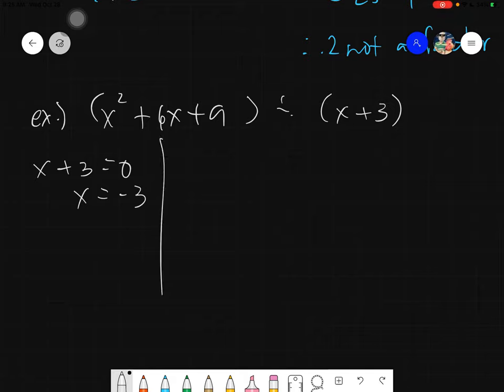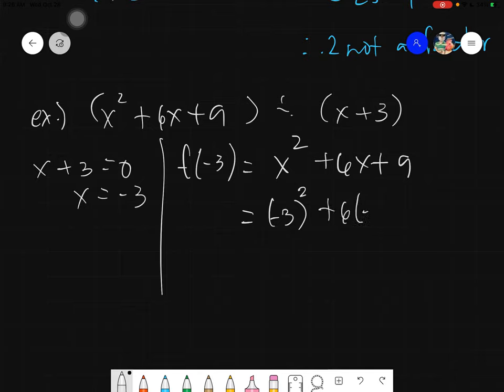Negative 3. And in the remainder theorem, if I have f of negative 3 of our given x squared plus 6x plus 9, evaluating this will give you negative 3 squared plus 6 times negative 3 plus 9.